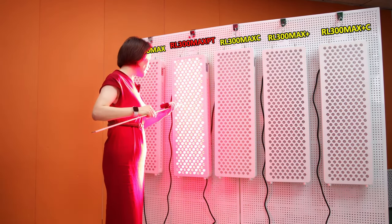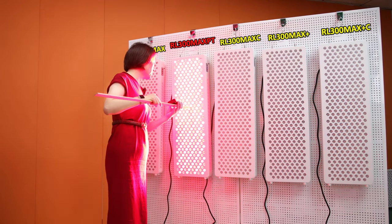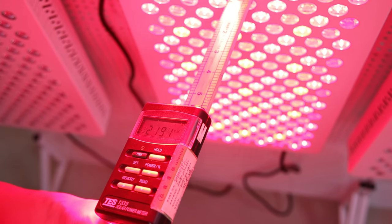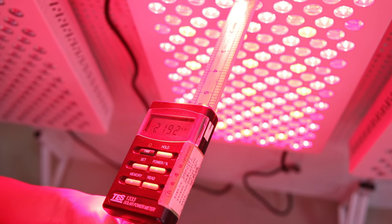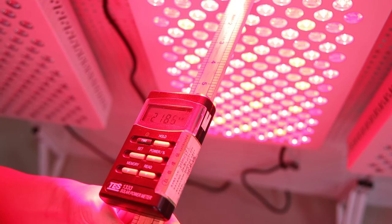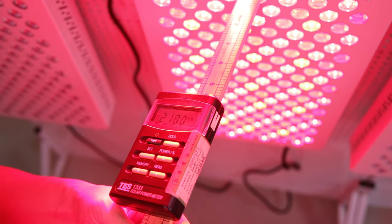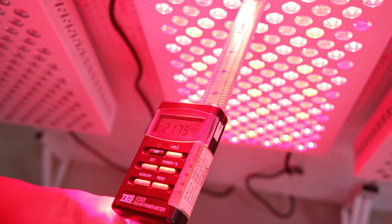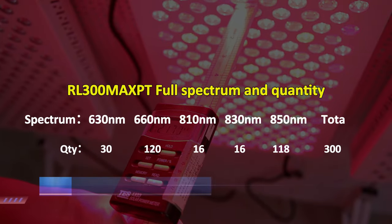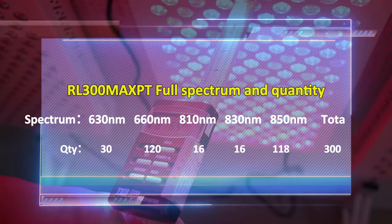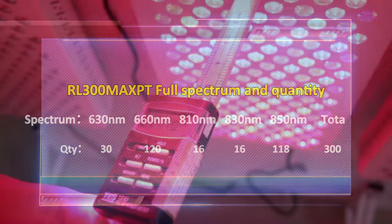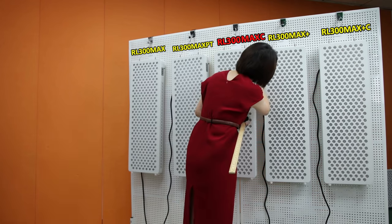This is the PT wavelength at 6 inches — about 220, very, very high. That's why we always recommend this model to our customers, because this model has multi-wavelength including five wavelengths, and the irradiance is also very, very high.